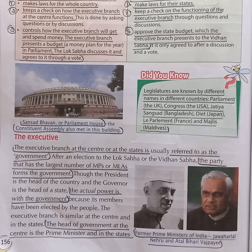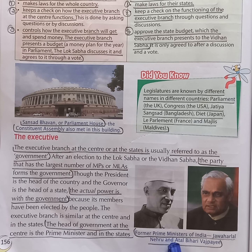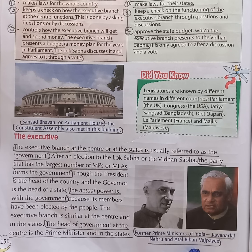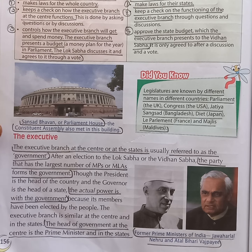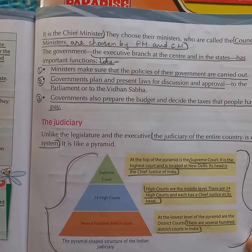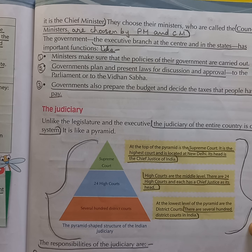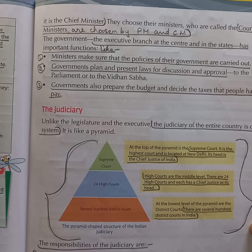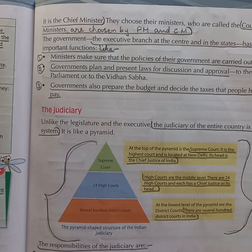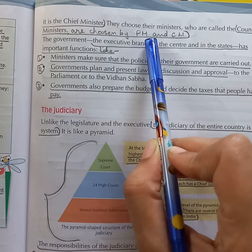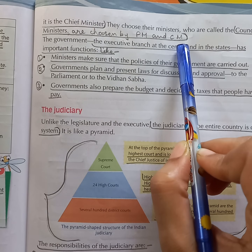Next question: name two former Prime Ministers of India. Answer: two former Prime Ministers of India are Jawaharlal Nehru and Atal Bihari Vajpayee. Next question: who chooses the Council of Ministers? Answer: the Council of Ministers are chosen by the Prime Minister and the Chief Minister.